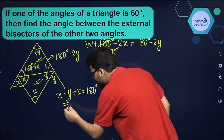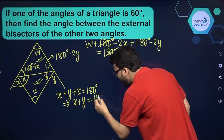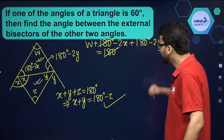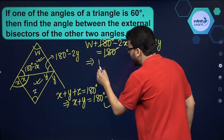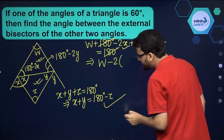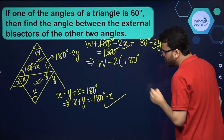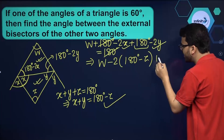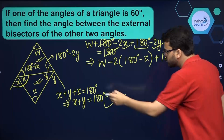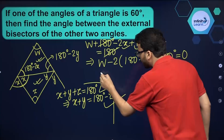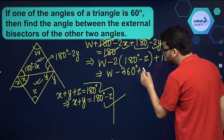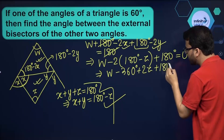From the inner triangle equation, x plus y equals 180 minus z. Now I can substitute this into the outer triangle equation. Taking minus 2 as common gives minus 2 times (x plus y), which I replace with (180 minus z). So I get: w minus 2(180 minus z) plus 180 equals 0.